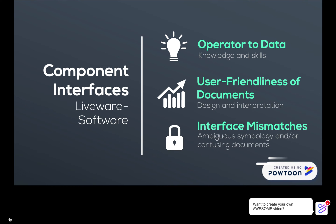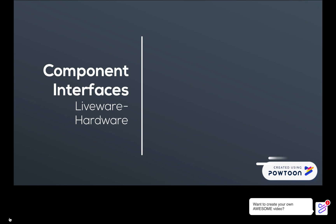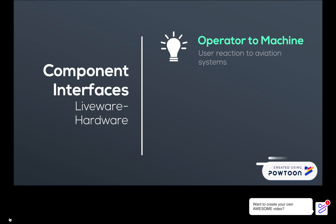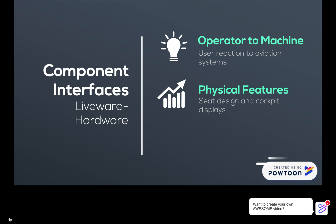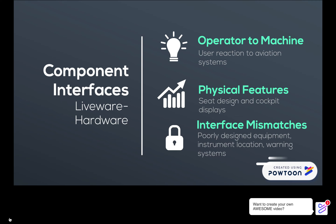Ambiguous symbology and confusing documents can lead to interface mismatch. Liveware to hardware is the interaction between operator and machine and is the user-reaction to aviation systems. It includes physical features like seat design and cockpit displays. Poorly designed equipment, instrument location, and warning systems are interface mismatches.